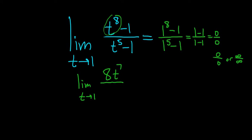All divided by—on the bottom piece, we do the same thing. So it'll be 5t to the 4th.